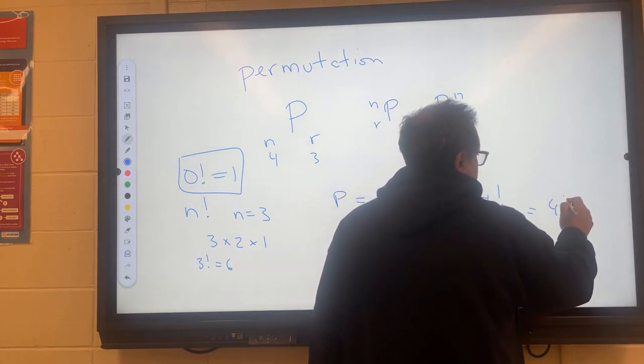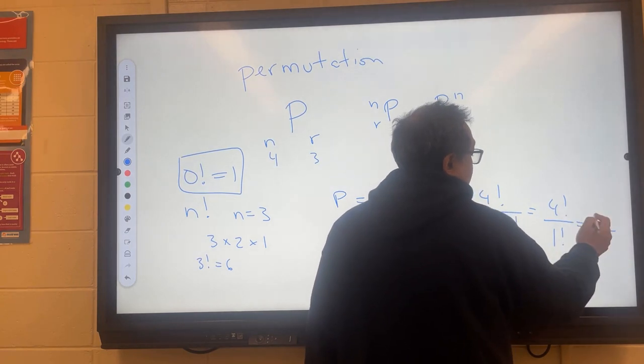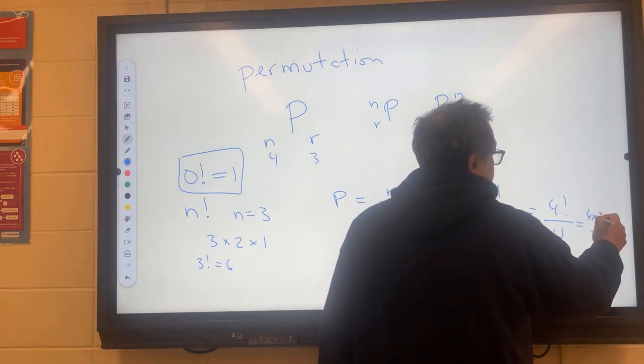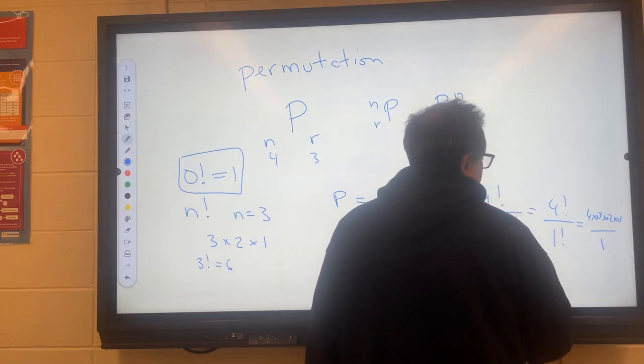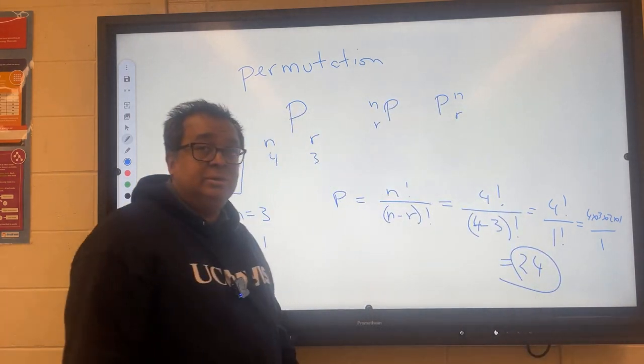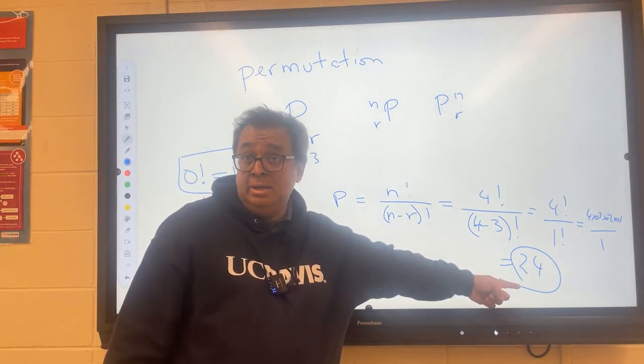and this is equal to 4 factorial over 1 factorial. 1 factorial is just 1, and 4 factorial is 4 times 3 times 2 times 1, and so this is going to come out to be 24. And that is the answer that we had before, but now we have a more mathematical reason behind it.